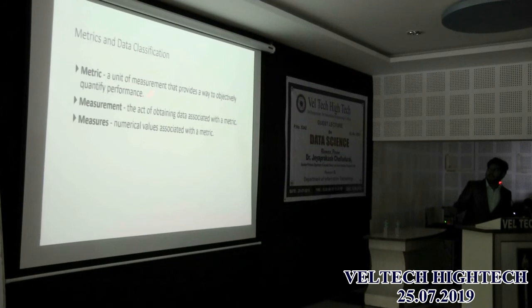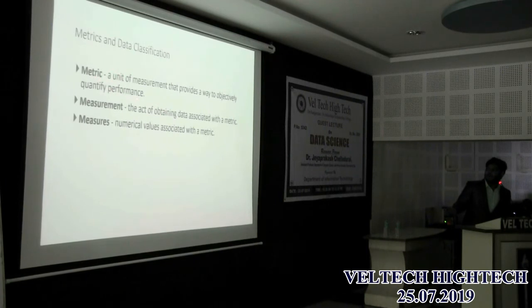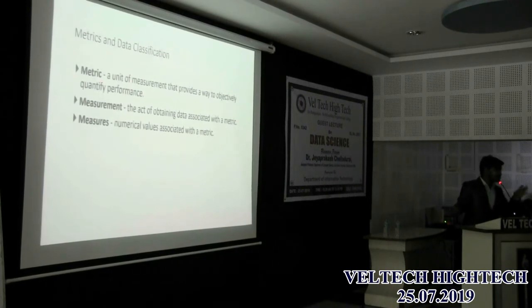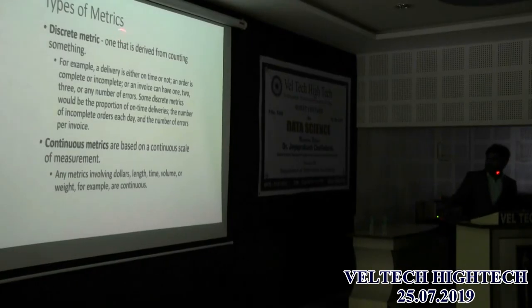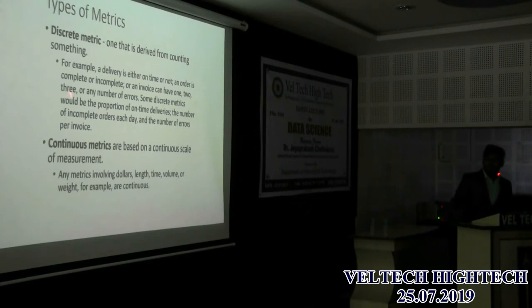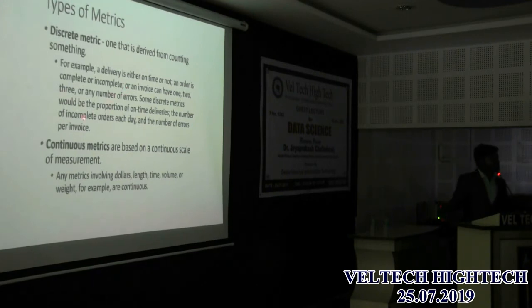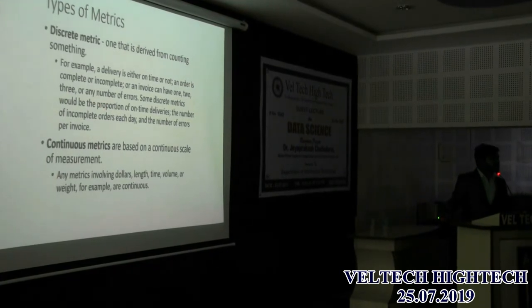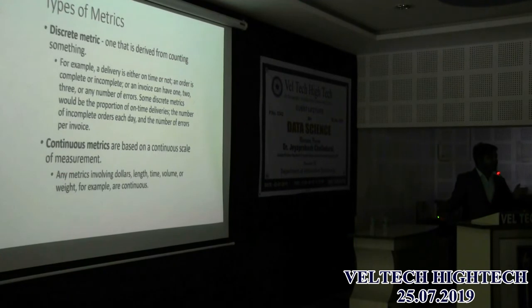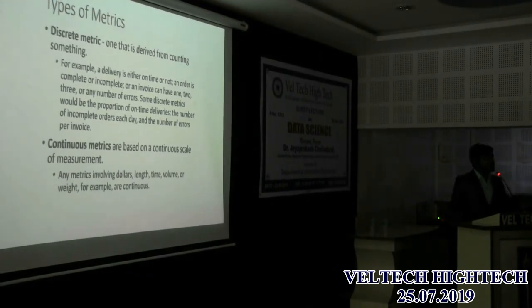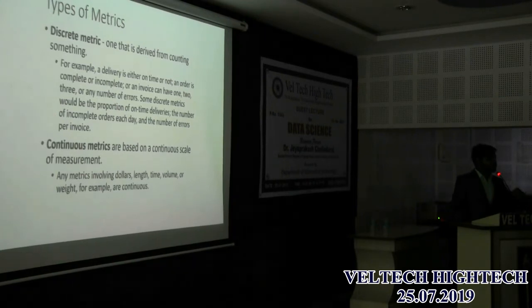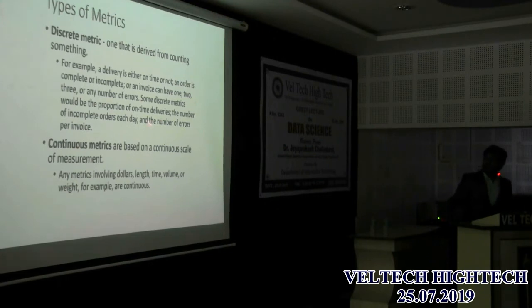Metrics are units of measurement that provide a way to objectively quantify performance. There are two types: discrete metrics and continuous metrics. Discrete metrics count things in whole numbers — for example, how many customer calls you attended per day, measured per hour, not per microsecond. Examples include number of deliveries made per day, where the time is discretized and not continuous.